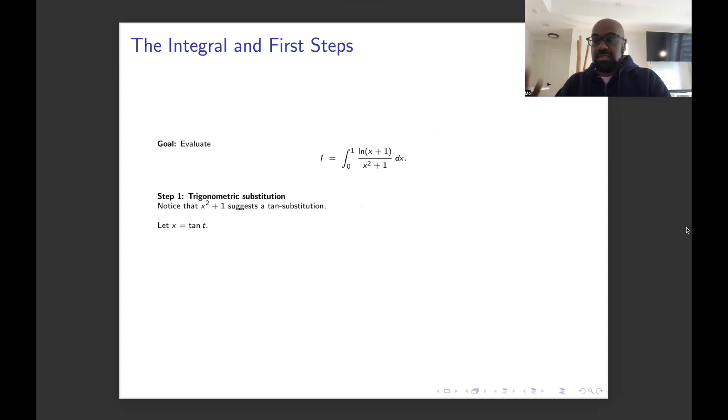We'll let x be tan t instead of u. And then x² + 1 is going to be tan² t + 1. But first we need to compute the dx in terms of dt. And since x is tan t, the derivative of tan is secant squared. So dx is sec² t dt. And then also x² + 1, the denominator, is tan² t + 1, which is sec² t.